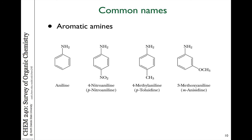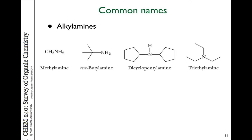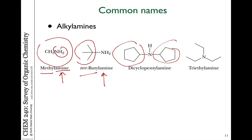There are common names associated with aromatic amines. Mostly remember aniline as the parent name — for example, 4-nitroaniline or 3-methoxyaniline. There are also common names for aliphatic amines, using amine as the parent with alkyl substituents: methylamine, tert-butylamine, dicyclopentylamine. For three groups, triethylamine. These are commonly used even though they're not strictly IUPAC — it's common to use amine as the parent and name the substituents attached to it.